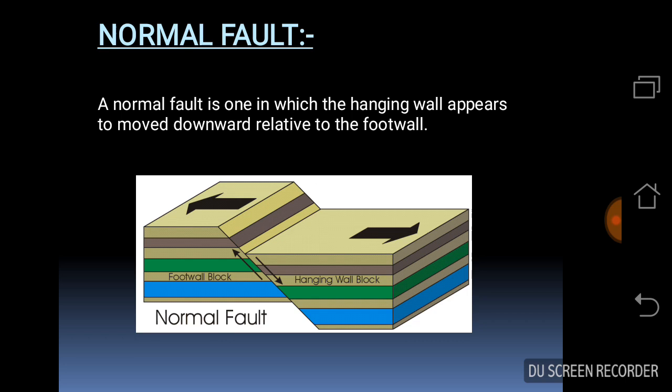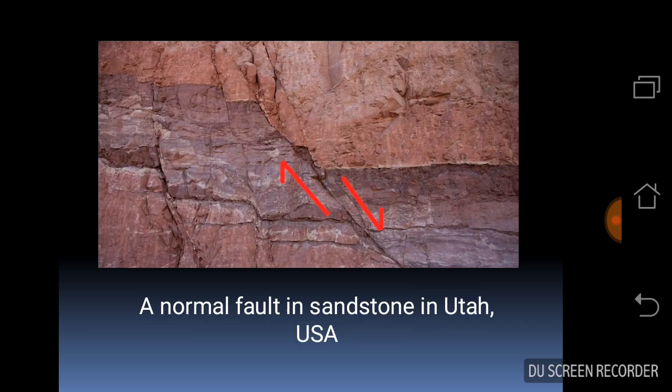Generally they emplace younger rocks below the older rocks. This is the picture of a normal fault, which clearly shows that the hanging wall appears to move down relative to the footwall. This picture shows a normal fault in sandstone in Utah, USA.